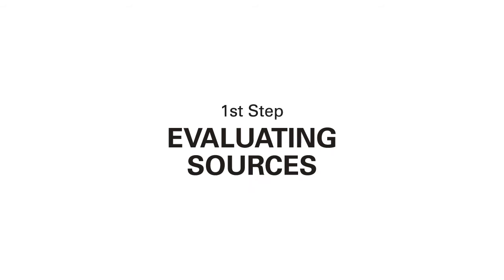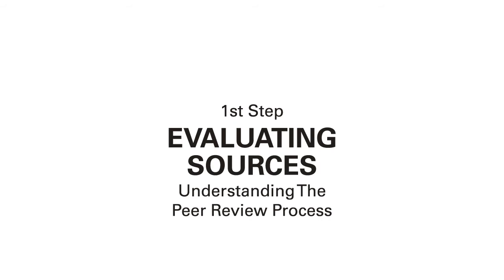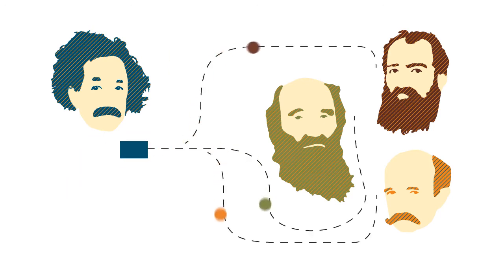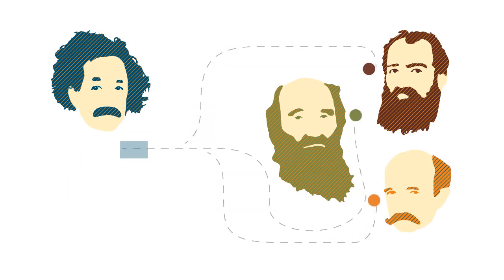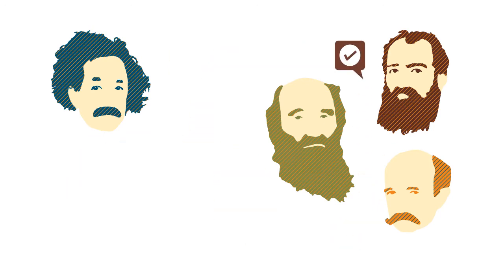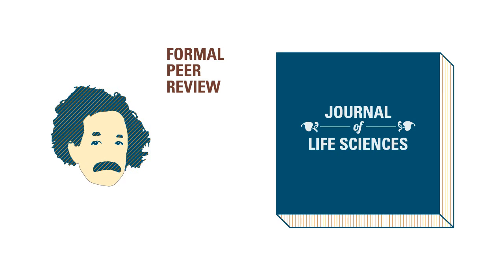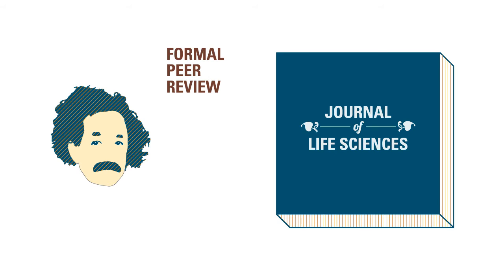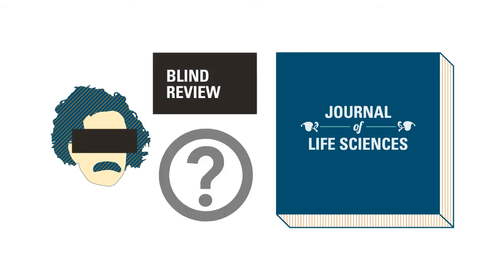The first step in evaluating sources is understanding the peer review process. There are several types of peer review. First, researchers may ask their colleagues to informally critique their work prior to publication. Another, more formal peer review occurs when an article is submitted to a journal for publication. This is often called a blind review because the author doesn't know who will be reviewing his or her article.